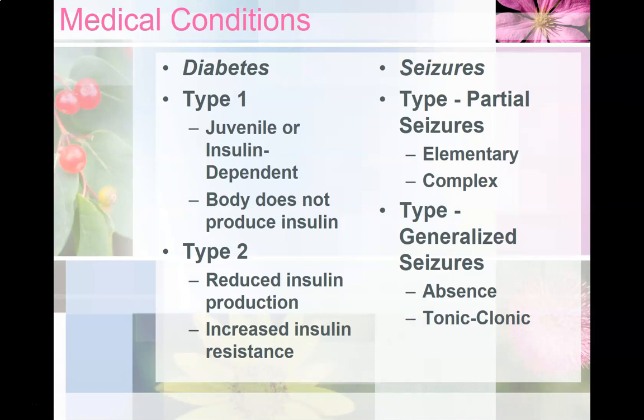Type 2 characteristics include the body's reduced ability to produce insulin, an increase in insulin resistance, and dysfunctional liver release of stored glucose. Treatments include insulin replacement for type 1, but for type 2, about 20% can control it with losing weight and exercise. For others, oral medications are necessary.